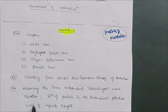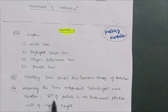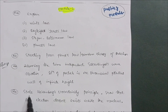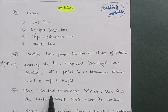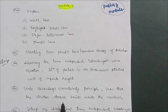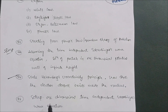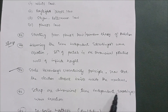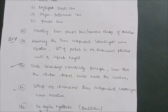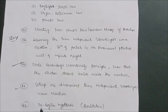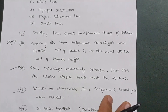Next important questions for Module 2: derive the time-independent Schrödinger wave equation and solve it for a particle in a one-dimensional potential well of infinite height — this is a super important question. Also, state Heisenberg's uncertainty principle and show that the electron does not exist inside the nucleus — another super important question. Additionally, 'set up the one-dimensional time-independent Schrödinger wave equation' may be the question phrasing, and cover the de Broglie hypothesis qualitatively.